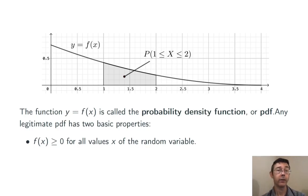First of all, it always needs to be positive. This is reflecting the fact that probabilities are always positive, never negative. So probability density should always be positive too.